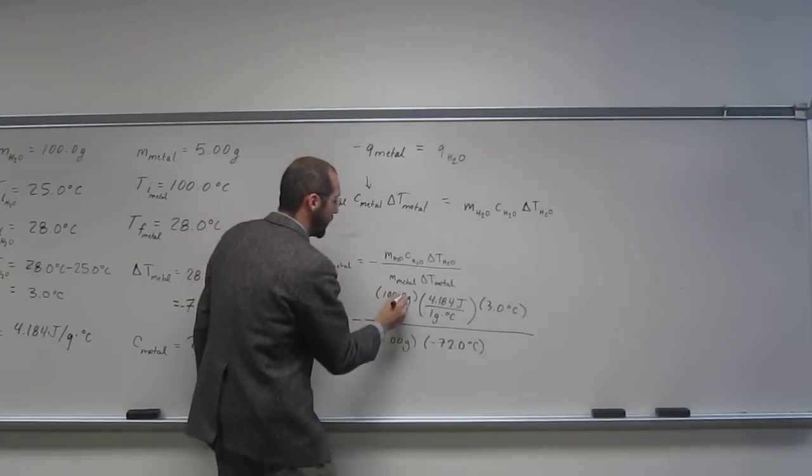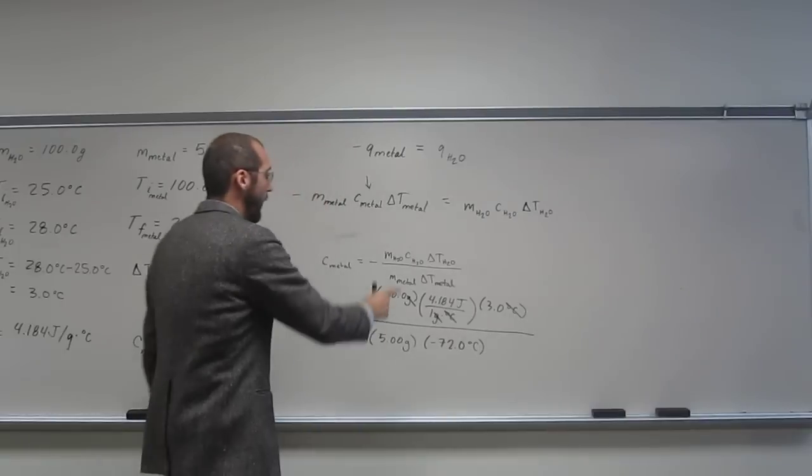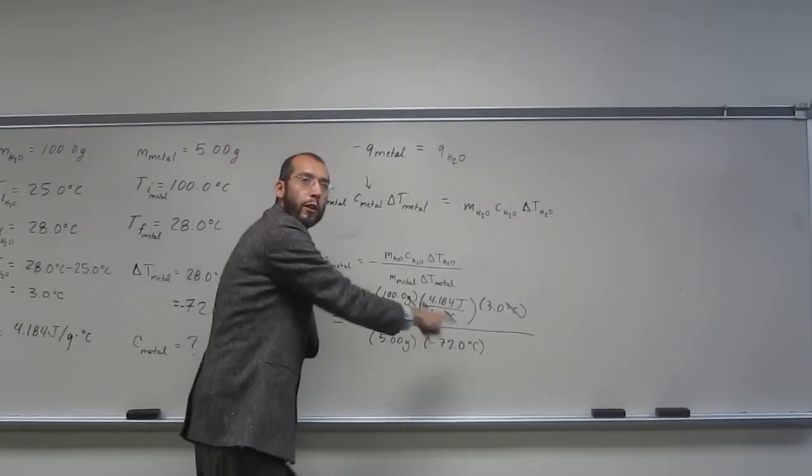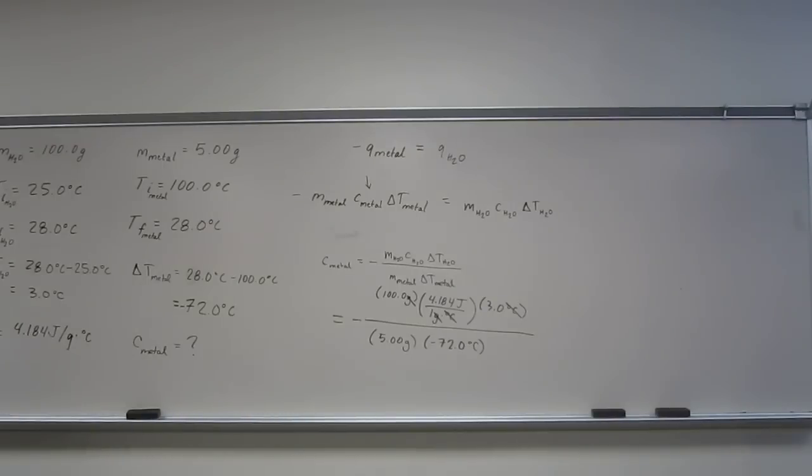So let's just cancel. Cancel there, cancel there, cancel there. So we've got joules per gram degree C. Right? Is that a good specific heat unit? Joules per gram degree C. So if you didn't know that, those are specific heat units.